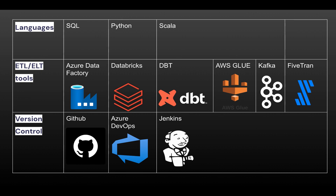Since you have to build data pipelines and do transformations, you should have good knowledge of ETL or ELT tools. The main ones are Azure Data Factory, Spark on Databricks, dbt, AWS Glue, Kafka, and Fivetran. Right now the market is more open towards Azure Data Factory, Databricks, and dbt, and for the streaming part Kafka and Glue as well. You should have hands-on knowledge of at least three of these ETL or ELT tools.